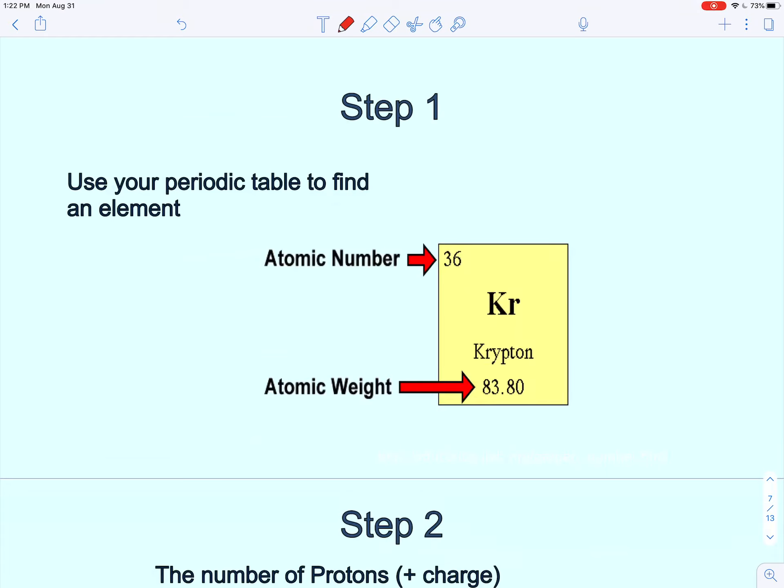So once you find your periodic table you're going to look for the element that is part of the question. So here it's asking how many protons, neutrons, and electrons are in krypton. So this top number is what we call the atomic number, the bottom number is atomic weight, sometimes called the atomic mass.